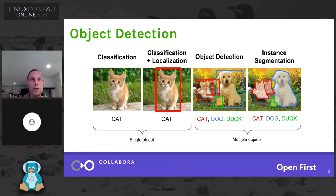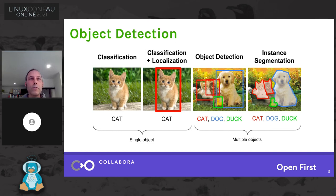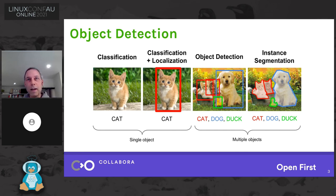Here on the slide, we have four different types of object detection tasks, moving from easier to more difficult from left to right. The first task is called classification, where we're given a video frame or an image and we want to determine the most important object in that image — in this case, a cat. Moving to the next task is localization, where we're able to put a bounding box around that cat. Then we have object detection with cats, dogs, and a duck, putting bounding boxes around all those objects. And finally, on the far right, it's segmentation where we can put an outline around each important object in the scene.